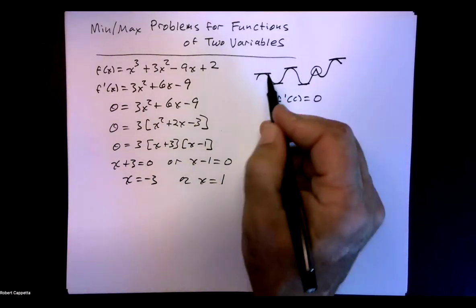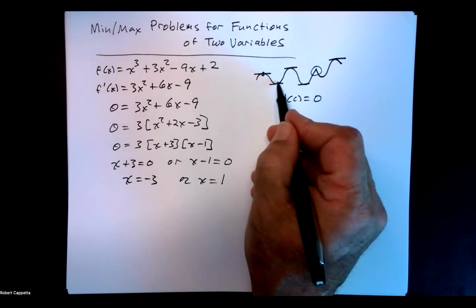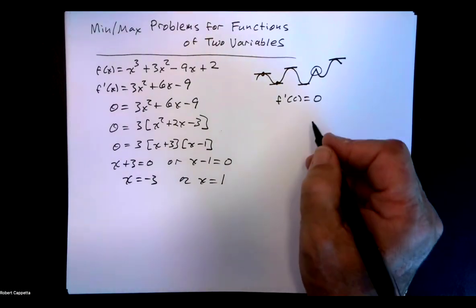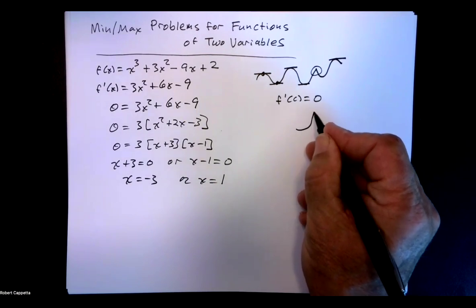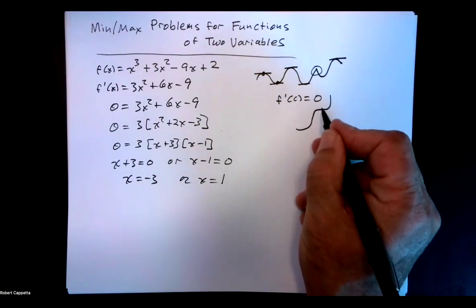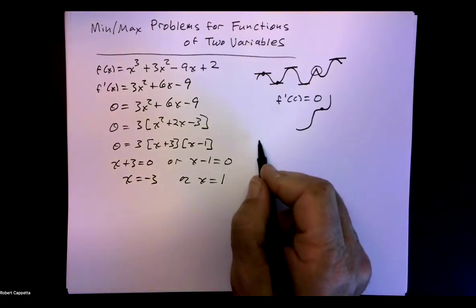Now the question is: is it a point that could have a maximum value or a point that has a minimum value? And of course we have another possibility — a point of horizontal tangency that is neither. So how do we determine whether a critical value is a minimum or a maximum? For functions of one variable, we had the first derivative test and we had the second derivative test. I want to focus on the second derivative test.